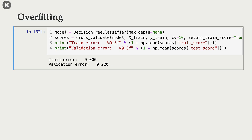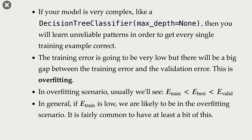At the end of the day, we want to apply this model on unseen examples and have it work well there. Here we see that training error is zero but validation error is high. When our model is very complex — like a decision tree with max depth None — it ends up learning unreliable patterns in order to get every single training example correct. The tree expands until all leaf nodes are pure, so training error is very low, but there is a big gap between training error and validation error. This is called overfitting.